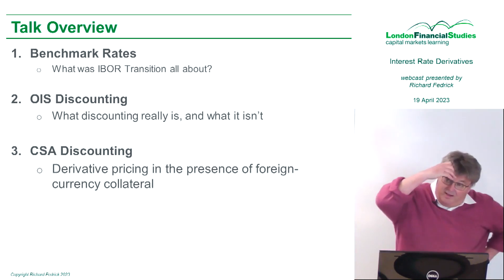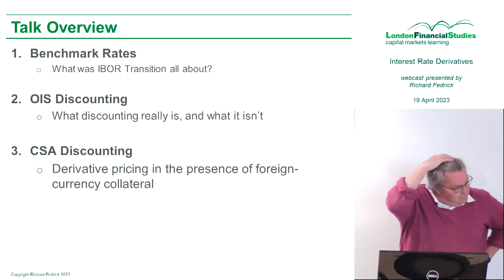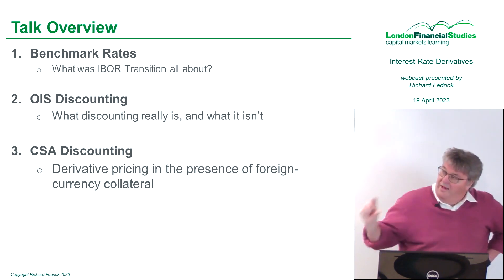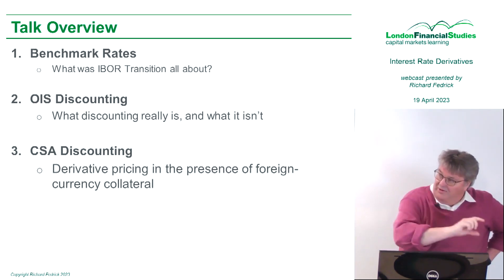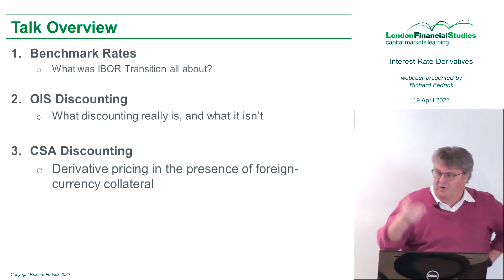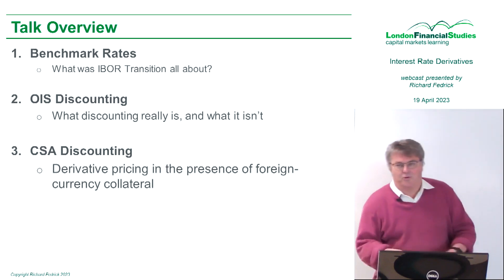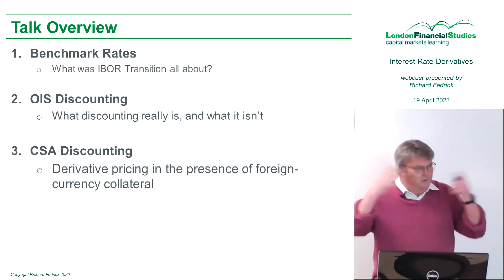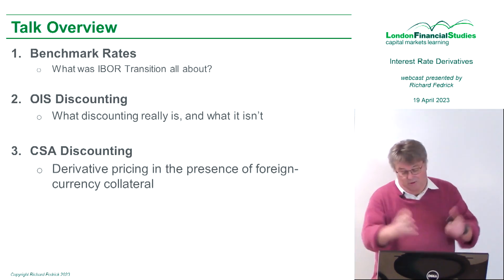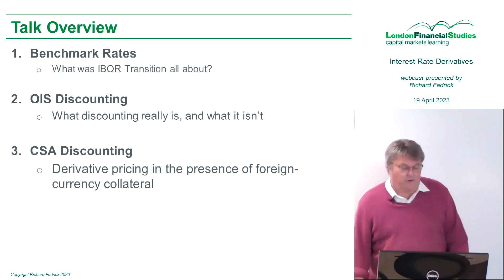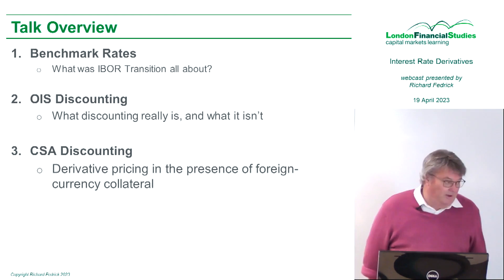To get to that point in about 40 minutes from now, I'm going to do a whirlwind tour of everything we have learned about discounting over the last 25 years, because the world has changed a lot in 25 years — from discounting interbank curves through the OIS revolution, through what we're going to talk about at the end, which is the proper, full cross-currency treatment — the full Monty, if you like.